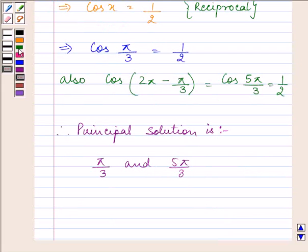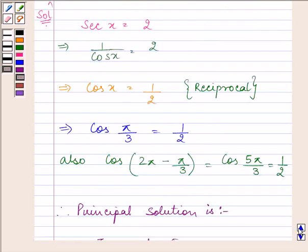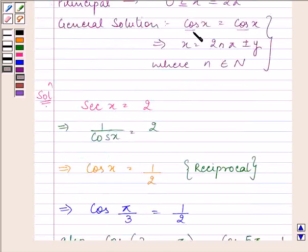Proceeding to find the general solution, as discussed above, cos x equals cos y implies that x equals 2nπ plus or minus y.